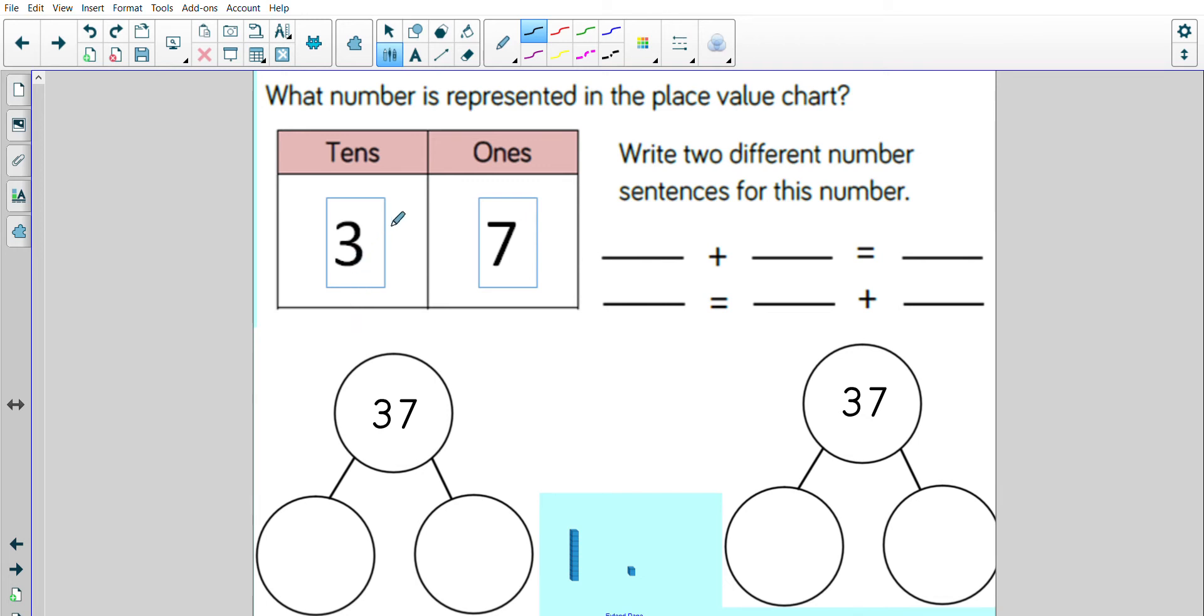I can draw that number using my tens and ones knowledge: 3 tens and 7 ones. If I count that number, I count 10, 20, 30, then I need to add the ones: 31, 32, 33, 34, 35, 36, 37. I've made the number 37.